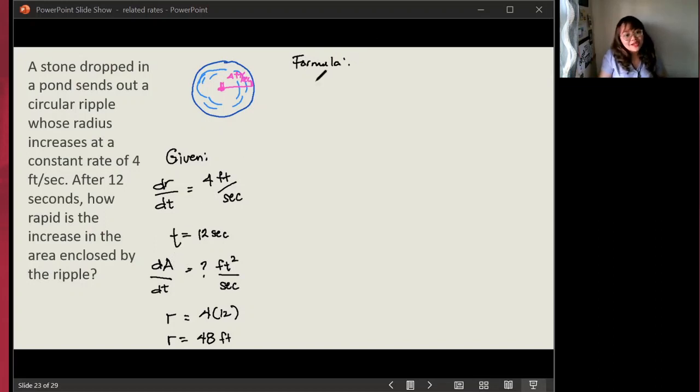And we're asked, how fast is the area of the ripple changing when it is at this radius already? So this gives us an idea of what formula we are going to use. We're looking for the change in area. Therefore, we are going to use the formula for the area of a circle, which is pi r squared. All right. So again, let's identify. Could we substitute anything here? Is there a constant here? No. So let's begin with the differentiation.